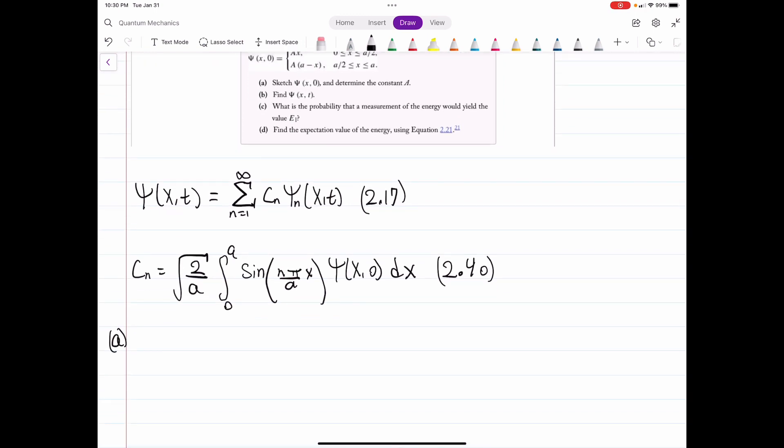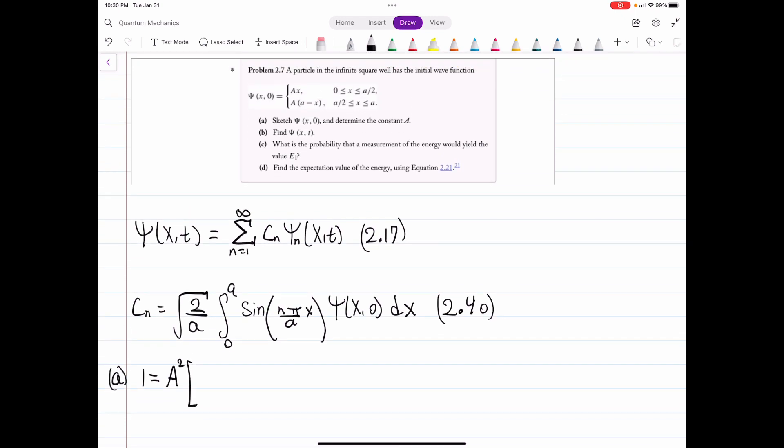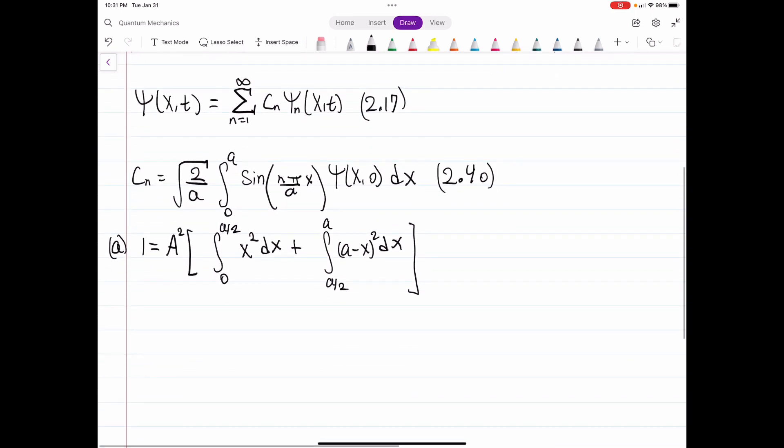I guess the first thing worth doing is to find our constant a. And we've done this a million times, so I'll go through this quickly. But essentially we'll have our a squared here, and then our integral. If you've seen the previous problems, then surely you're fine with this. I think for the sake of time, I'll just tell you that a is 2 root 3 over a cubed square root. All you have to do is work out the integral and solve for a.